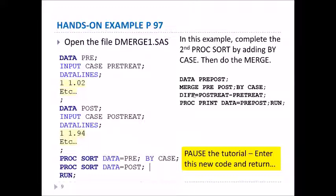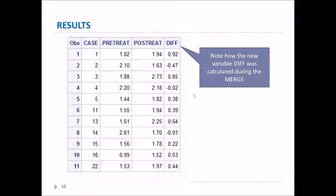Pause the tutorial, enter this new code, get it to work, and then return to the tutorial. Here are the results. Our original dataset had the column called pretreat. We merged in the column called posttreat, and at the same time we calculated the diff variable, which was posttreat minus pretreat.